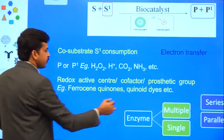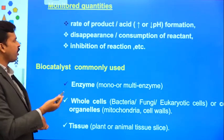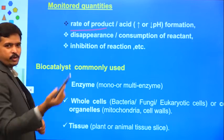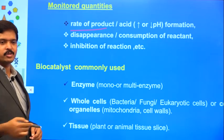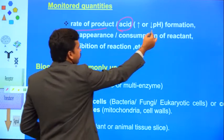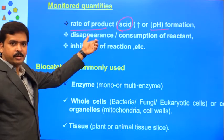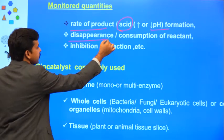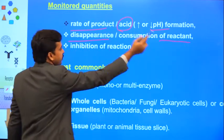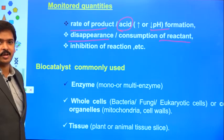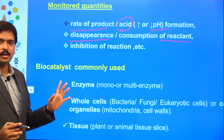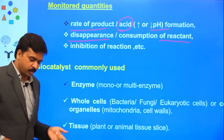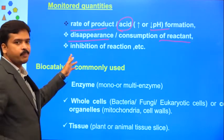As I mentioned, the rate of product formation matters. When you use glucose in the presence of glucose oxidase, you get gluconic acid, and the change in acid sometimes gives you a pH variation. So the product formation itself you can measure, or because of that product there might be a change in pH — increase or decrease — that you can measure. Similarly, you can measure the disappearance of reactant, or inhibition of the reaction itself. All these things can be easily monitored.